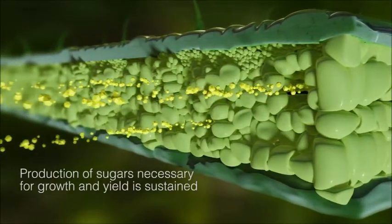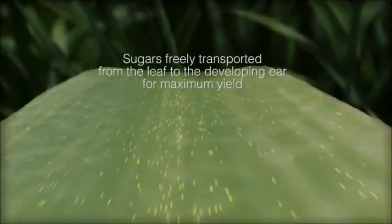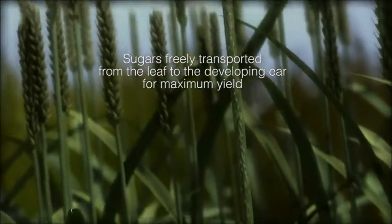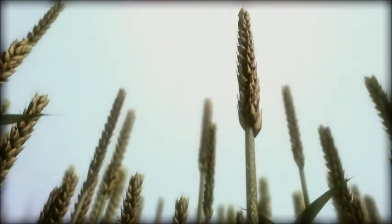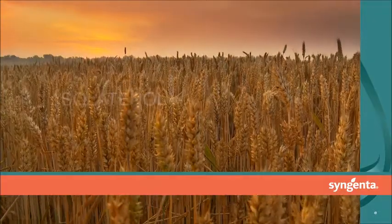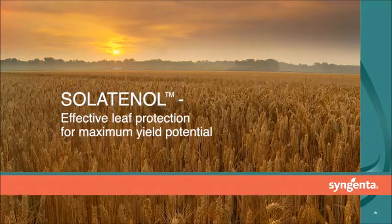The production of sugars necessary for growth and yield is sustained, and sugars can be freely transported from the leaf to the developing ear for maximum yield. Celatinol's more complete leaf protection allows the plant to fulfill its high yielding potential.